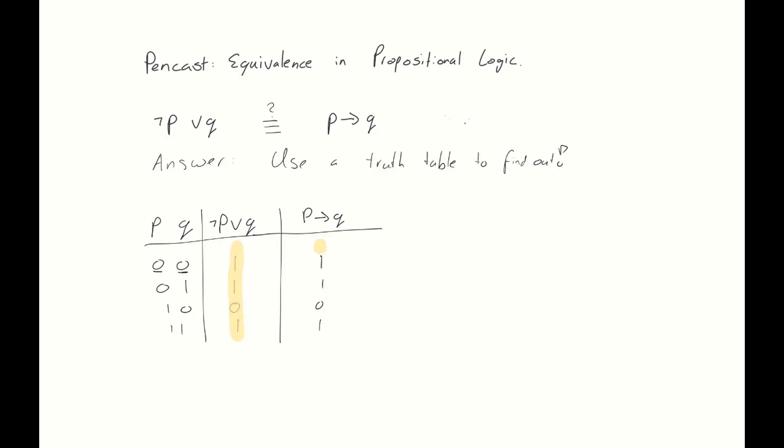Having created the truth table for these two propositions however I see that they are identical. They are true in the same places and they are false in the same places. In other words, the truth table says that these two claims, these two propositions, are indeed equivalent. We've used the truth table to show this.